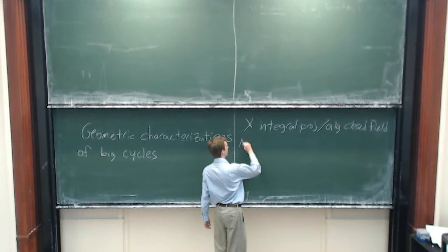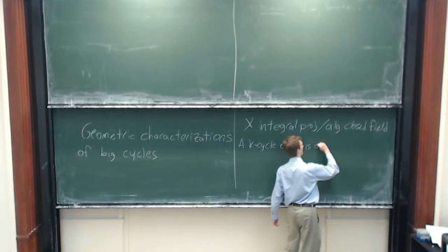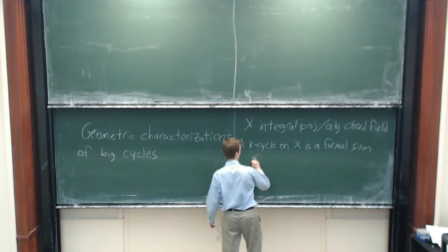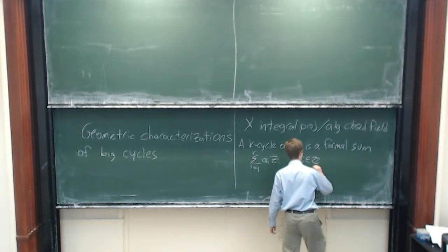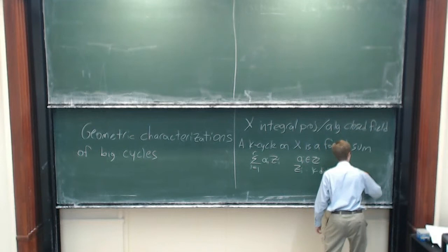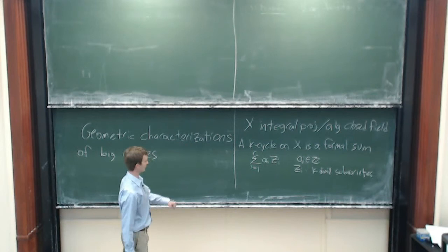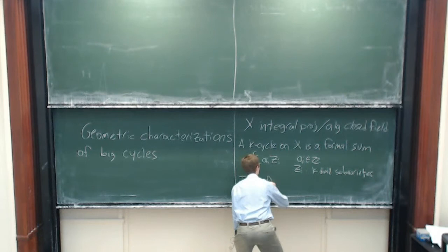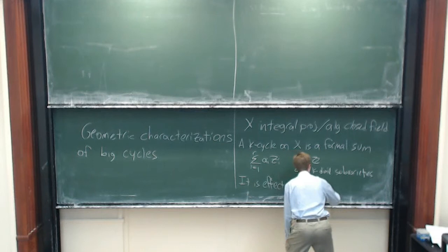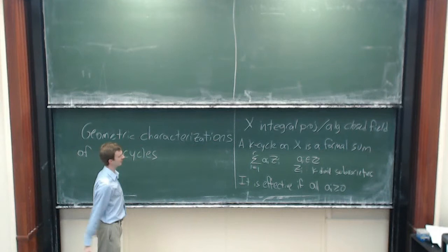A k-cycle on X is a formal sum from i equals 1 to r of a_i z_i, where the a_i are integers and the z_i are k-dimensional subvarieties of X. A k-cycle is just a k-dimensional equivalent of a Weil divisor. We say that a k-cycle is effective if all of the a_i's are non-negative — exactly the same setup as for divisors.